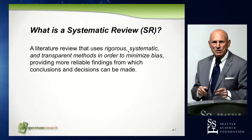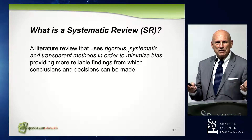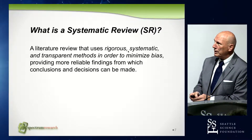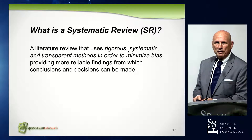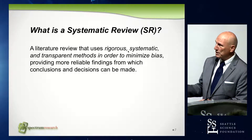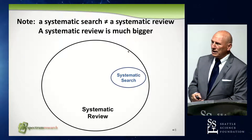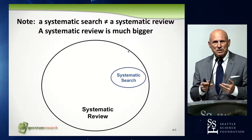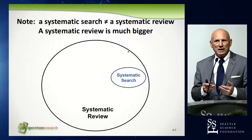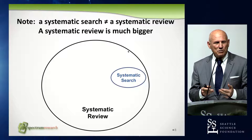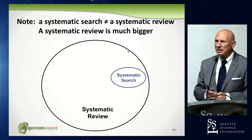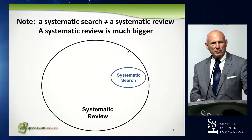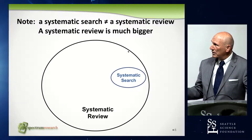Let's back up and talk about what systematic reviews actually are. A systematic review uses rigorous, systematic, and transparent methods in order to minimize bias. A lot of people misunderstand systematic reviews — they believe that systematic searches of the literature equals a systematic review, but it doesn't. A systematic search of the literature is just a small subcomponent of what a systematic review entails. It's a much bigger thing.